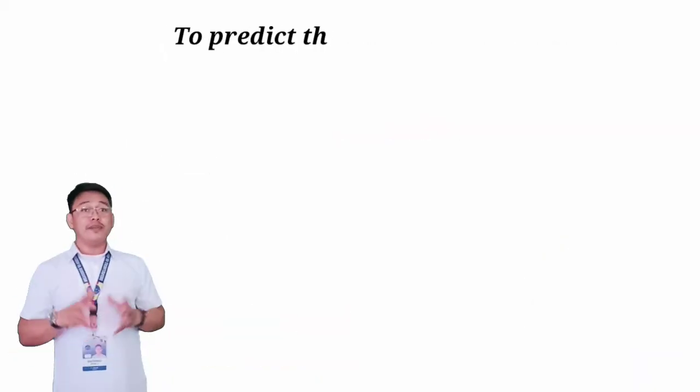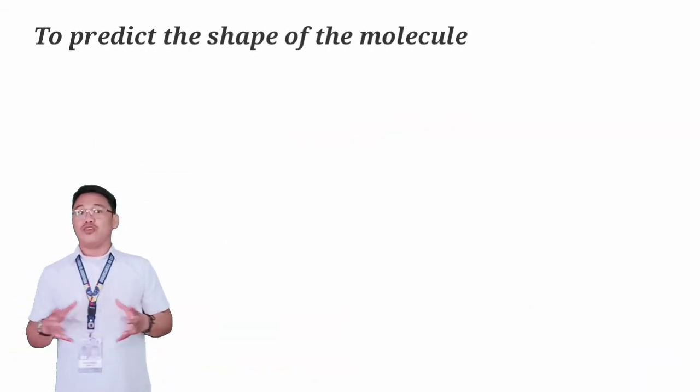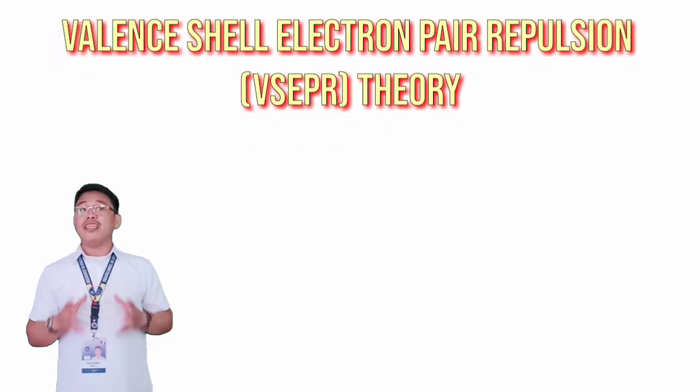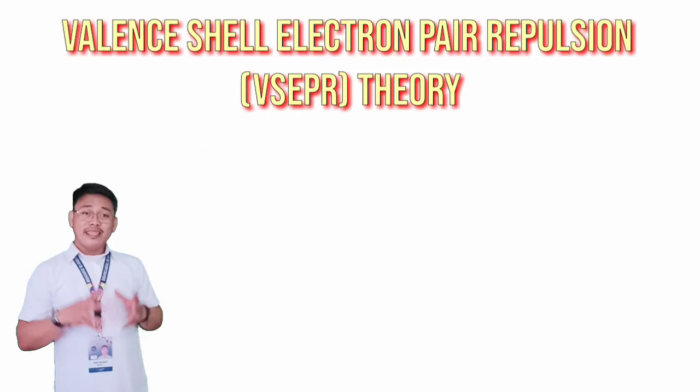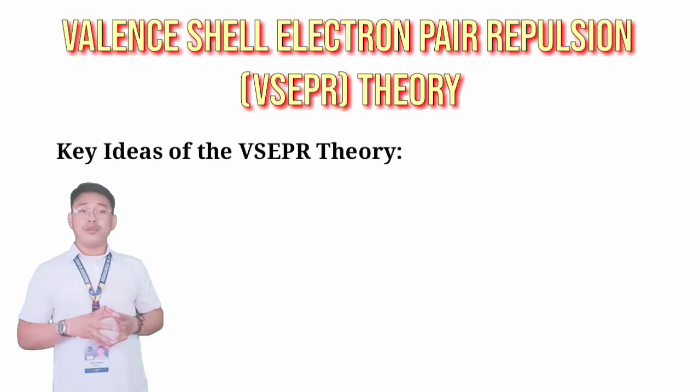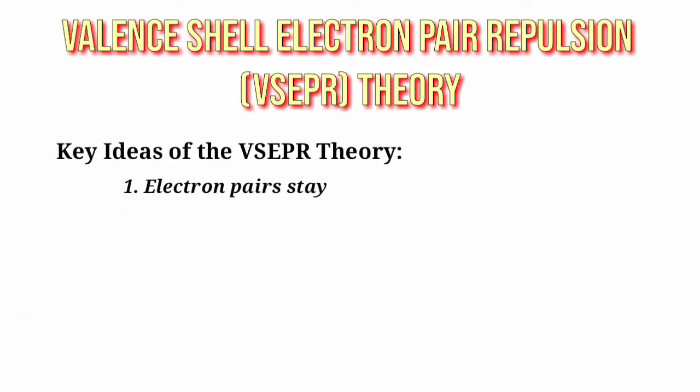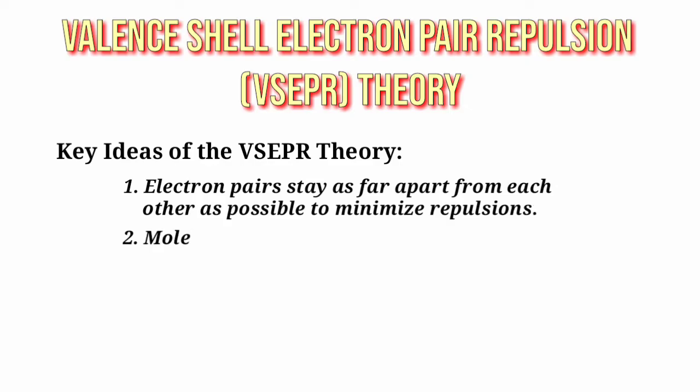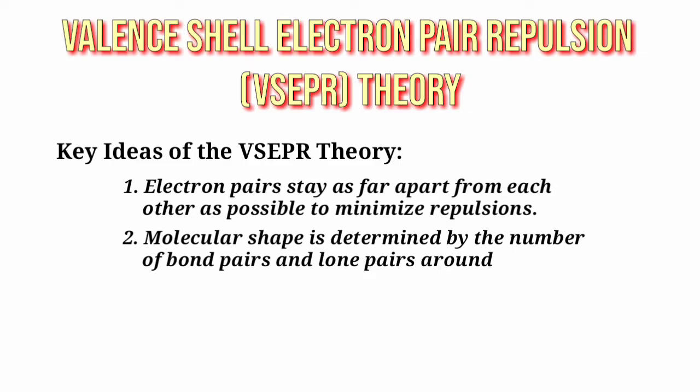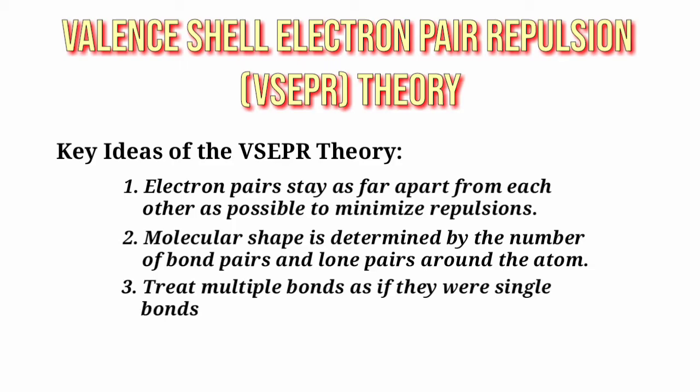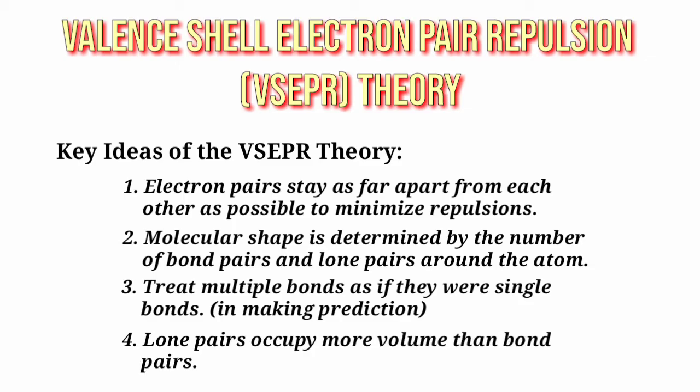Now, to predict the shape of the molecular geometry of the molecule, we follow the VSEPR model or the valence-shell electron pair repulsion. The key ideas of the VSEPR theory are: 1. Electron pairs stay as far apart from each other as possible to minimize repulsions. 2. Molecular shape is determined by the number of bond pairs and lone pairs around the central atom. 3. Treat multiple bonds as if they were single bonds in making the prediction. And fourth, lone pairs occupy more volume than bond pairs.